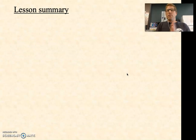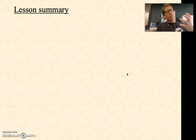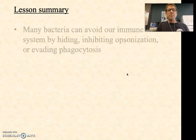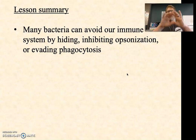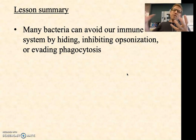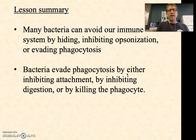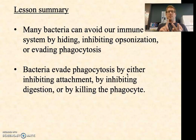There's a lot to work through here — make sure you're lining it up with your textbook. To summarize all the different ways bacteria can potentially evade the immune system: many bacteria can avoid our immune system by hiding, by inhibiting opsonization — which is the process of coating the pathogen to make phagocytosis more effective — or by evading phagocytosis in one form or another. They can evade phagocytosis by inhibiting attachment, by inhibiting the digestion phase, or by directly killing the phagocyte after it has ingested them.